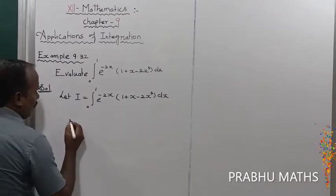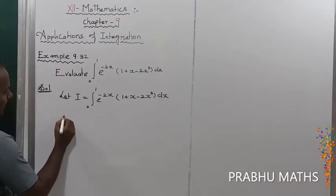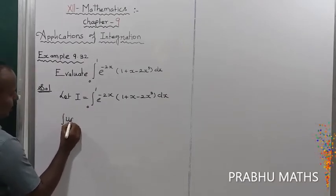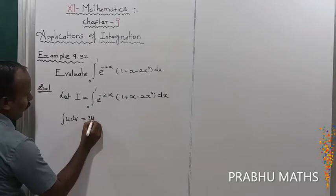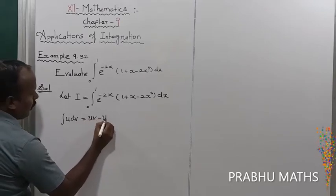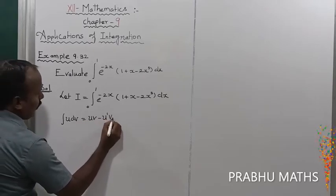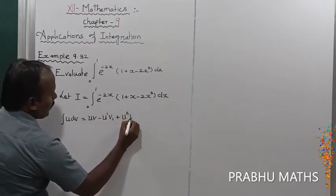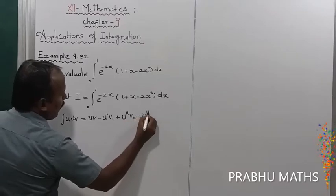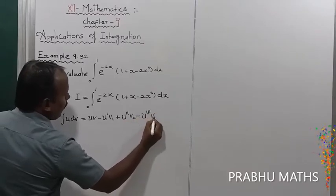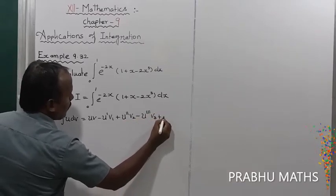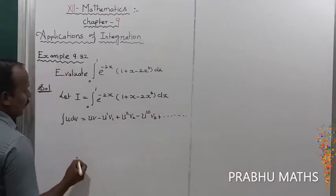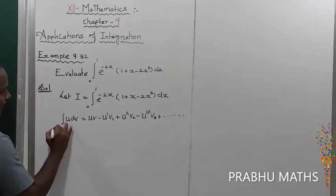There is a formula called Bernoulli's formula — integration by parts: the integral of u dv is equal to u·v minus u'·v₁ plus u''·v₂ minus u'''·v₃ and so on.